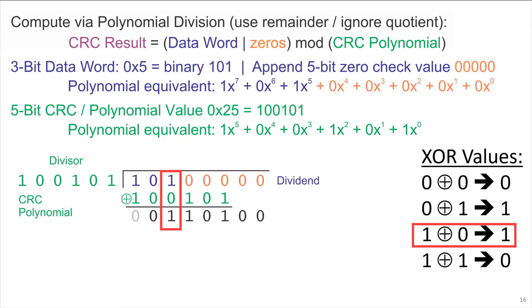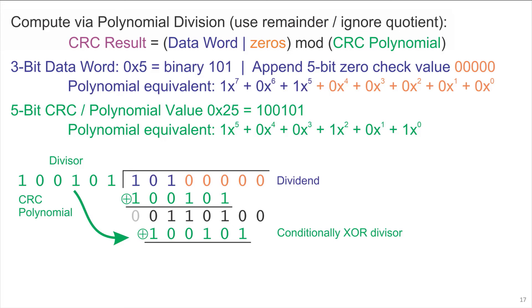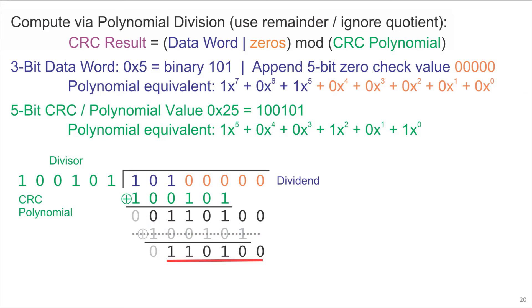Now we're done with that step, and it's time for the next conditional XOR, one bit to the right. This time, however, the divisor is too big to be subtracted from the remaining dividend, so instead of doing the XOR, we cancel it out and do no operation. That still ensures that the topmost bit is 0, so that coefficient drops out, and we're left with 110100 as the remaining dividend.